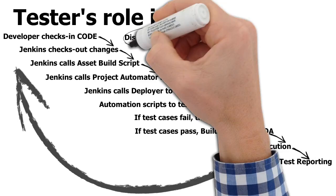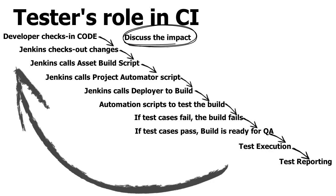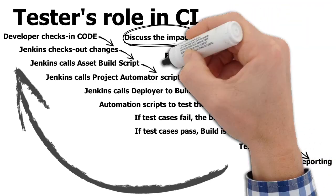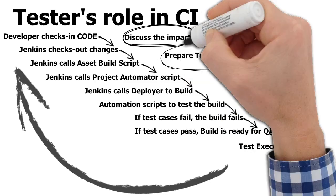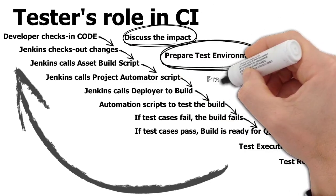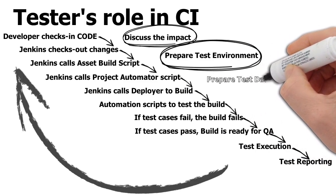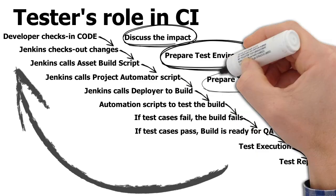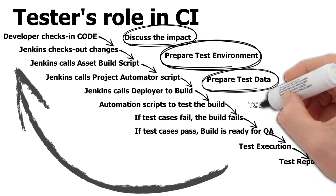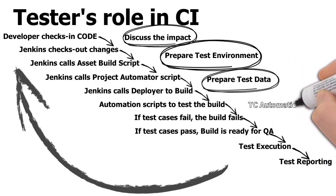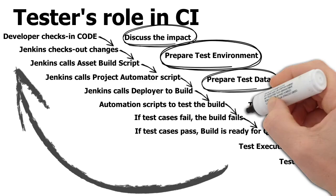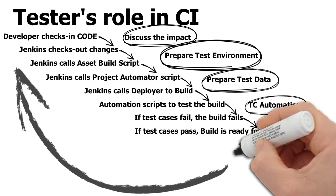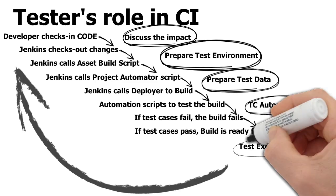Let's see what is the role of the tester in this CI model. Developers and testers can discuss the impact, and the tester gets to know how much to test and what to test. The tester can help in preparing the test environment and knows what kind of environment is needed. They prepare test data and a simulated test environment. They can also help in test automation — developers and testers are equally important in this.